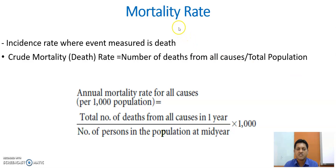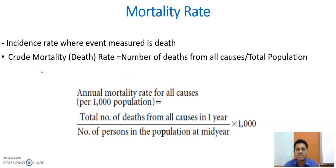Now I am discussing with you the mortality rate. Mortality rate is the incidence rate where the event measured is death. It means that whenever people are living in a community, how many people usually die per year — counted by year. An important term in mortality rate is the crude mortality rate, also known as the crude death rate.